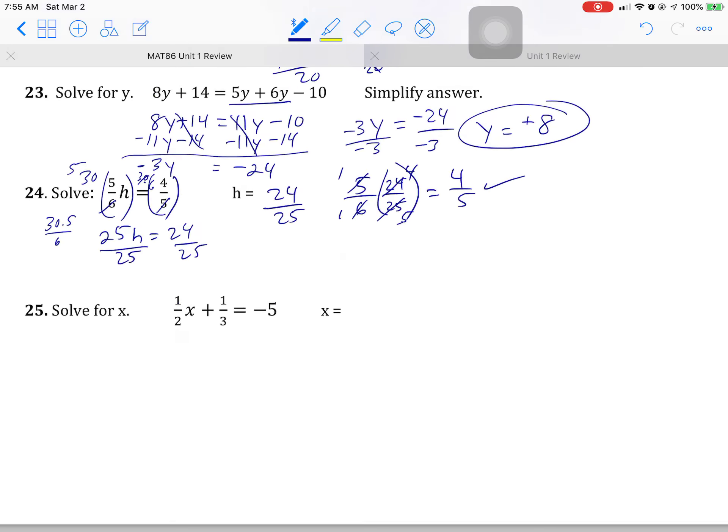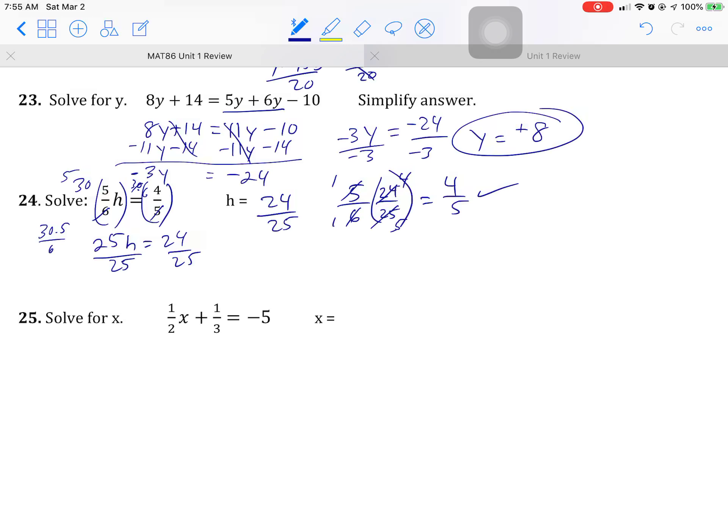Alright. Next. This is the last one. Solve for X. LCD is what? 2 times 3. They have nothing in common. Multiply them together. You get 6. Clear the fractions with that.